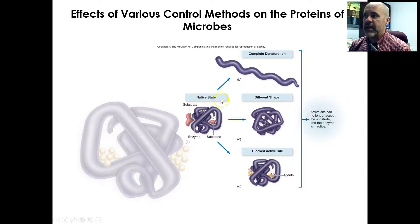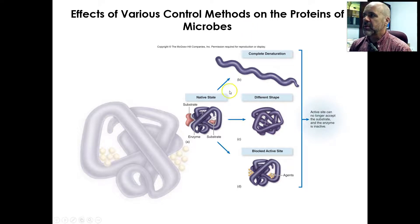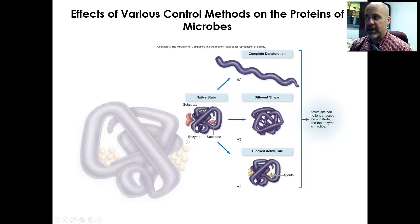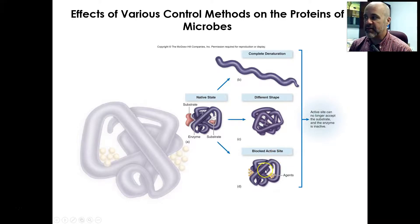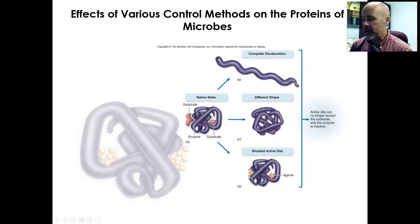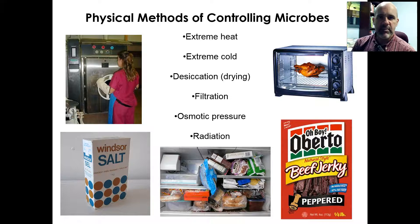You have to have that 3D shape in order for enzymes to be able to bind to their substrates, and for other proteins their 3D shapes are going to be important for their functions as well. Some control agents cause complete denaturation, so the 3D structure unravels; some may simply alter the shape so the protein still won't be able to do its job; and then some control agents will block the active sites of enzymes — the chemical agent attaches to enzymes and blocks them from being able to bind their substrate.